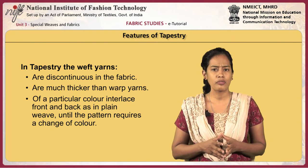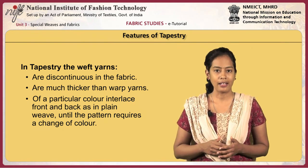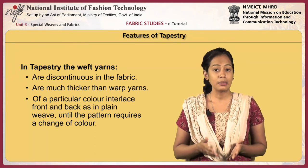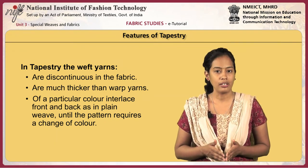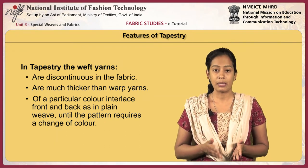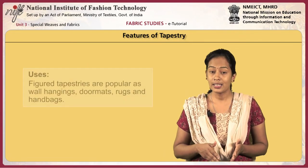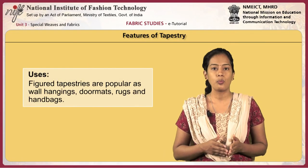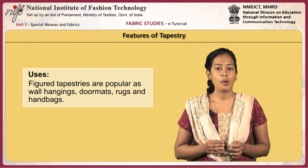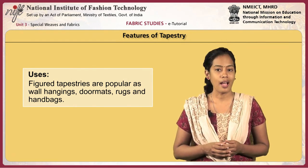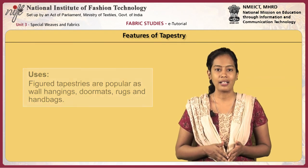Rather, they change color as the pattern changes. Weft yarns are much thicker than warp yarns. Hence, the warp yarns are completely covered in the fabric and hardly visible. The weft yarns of a particular color interlace front and back as in plain weave until the pattern requires a change of color. Sometimes they also interlace and are inclined at an angle with the warp yarns. Tapestries are popular as wall hangings, door mats, rugs, and handbags.